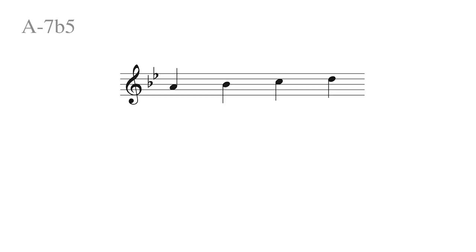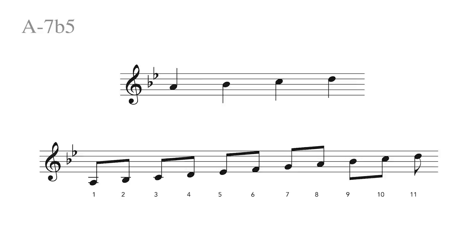In order to be able to do this, we need two things. One, to know what the 11th or the 4th of A minor 7 flat 5 is. And two, to be able to play the Cry Me A River lick starting on different degrees. Task one: what is the 4th or the 11th of A minor 7 flat 5? Counting up the scale, four notes up, we get D.